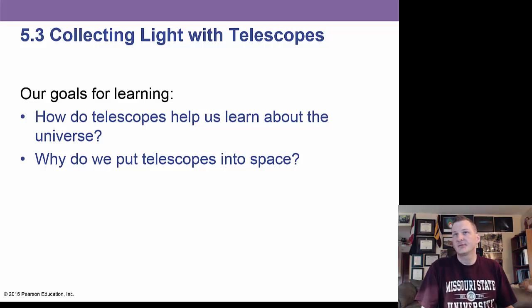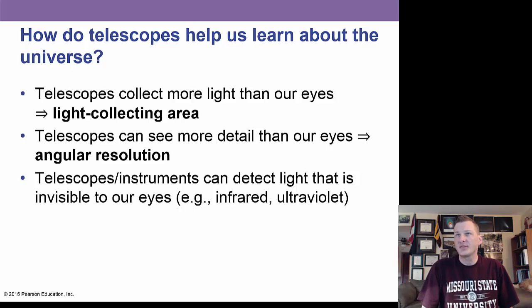Now, let's look at something more geared for us, collecting light with telescopes. We're going to learn about how telescopes help us learn about the universe and why we put some telescopes in space. The most important thing about a telescope is its light-gathering area, how big it is. The bigger it is, the more light it gathers. If you have an 8-inch telescope and a 16-inch telescope, like they have at Missouri State University, the 16-inch will not gather twice as much light. It will actually gather four times as much light. We also want to have more detail in what we see, and so we call that angular resolution, being able to see fine detail that's close up.